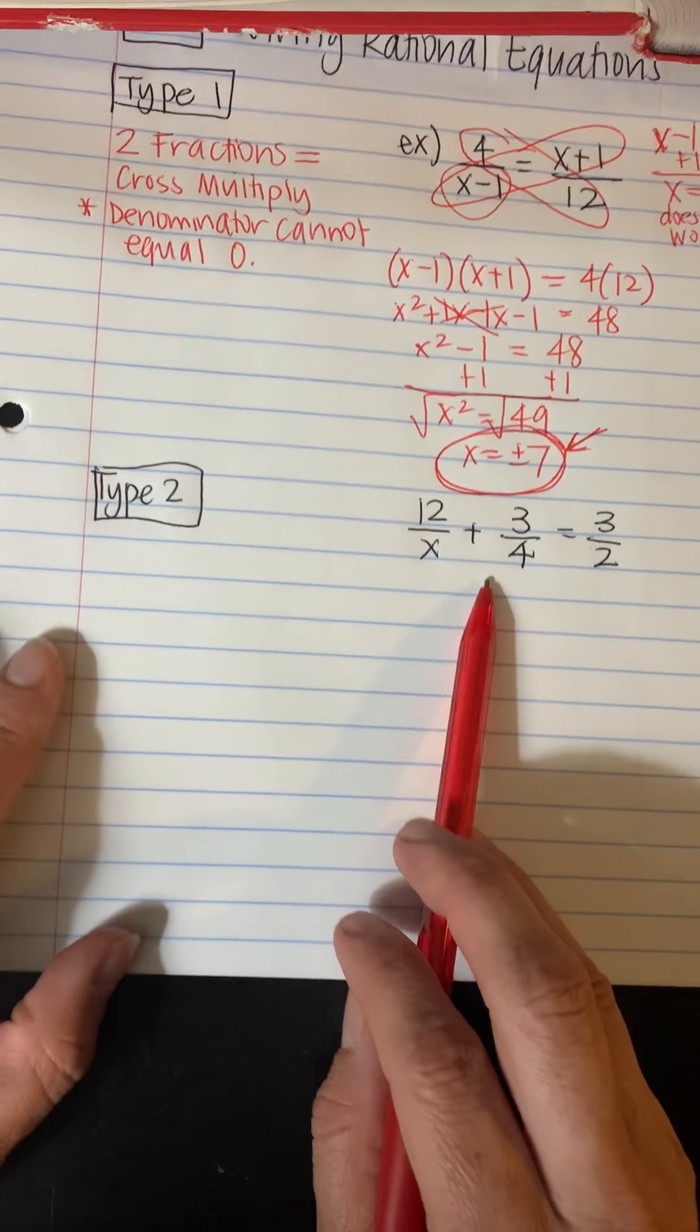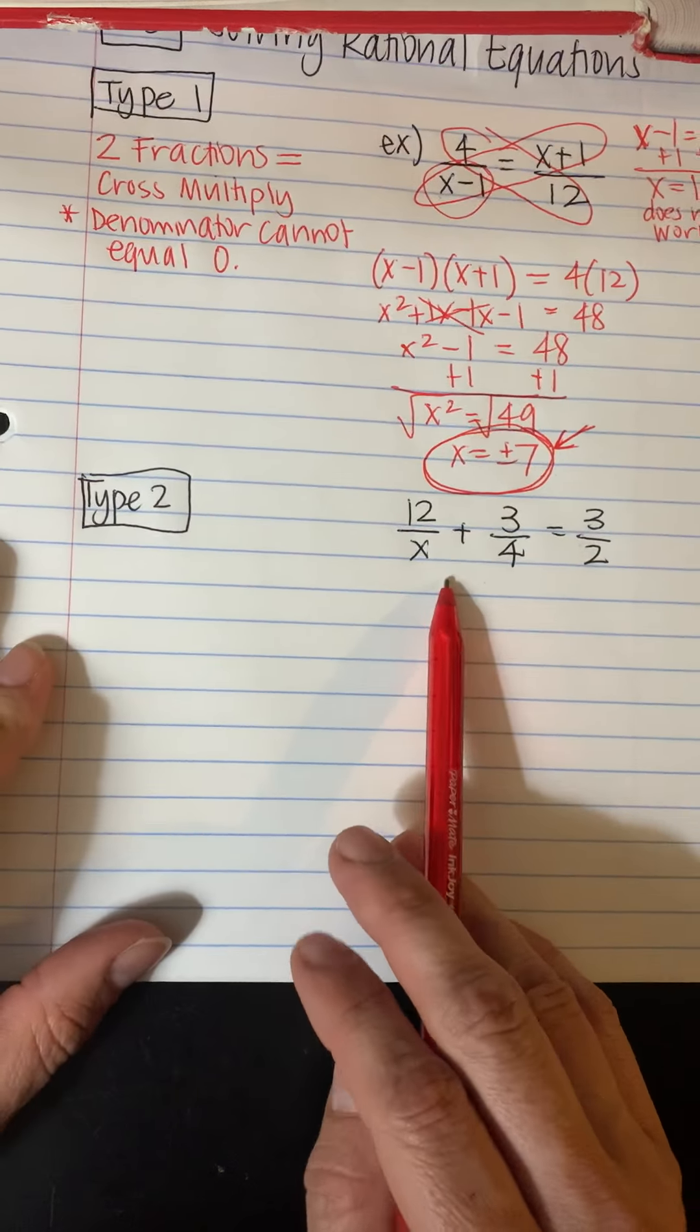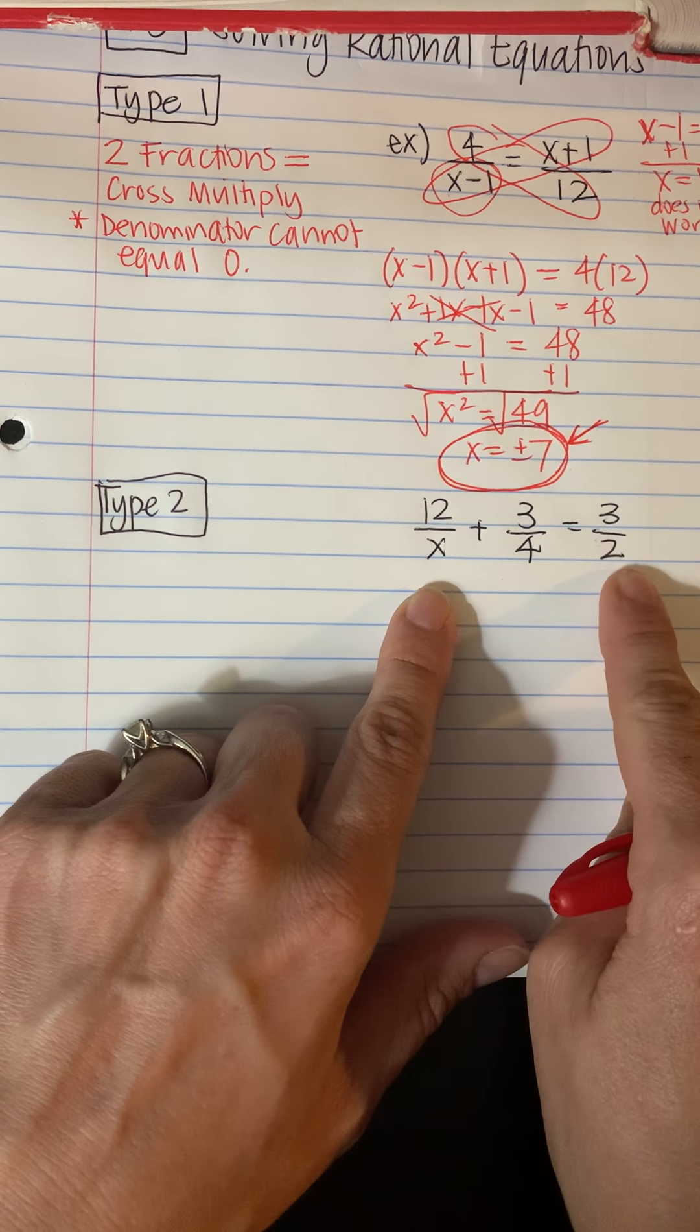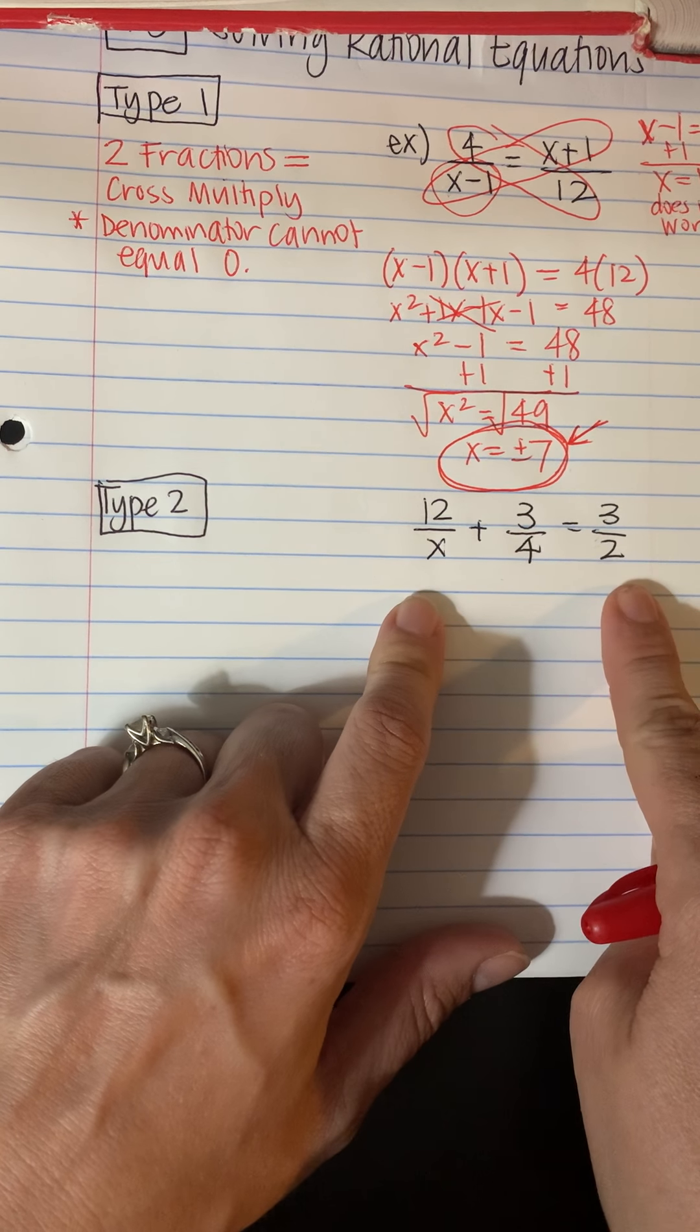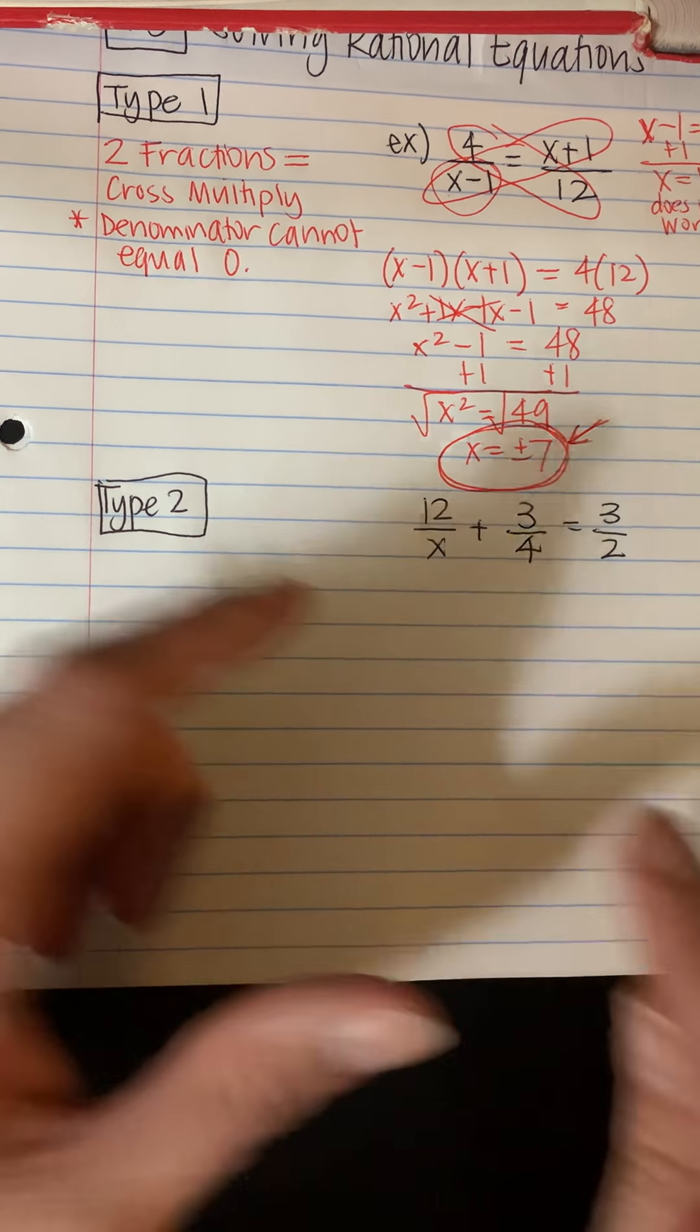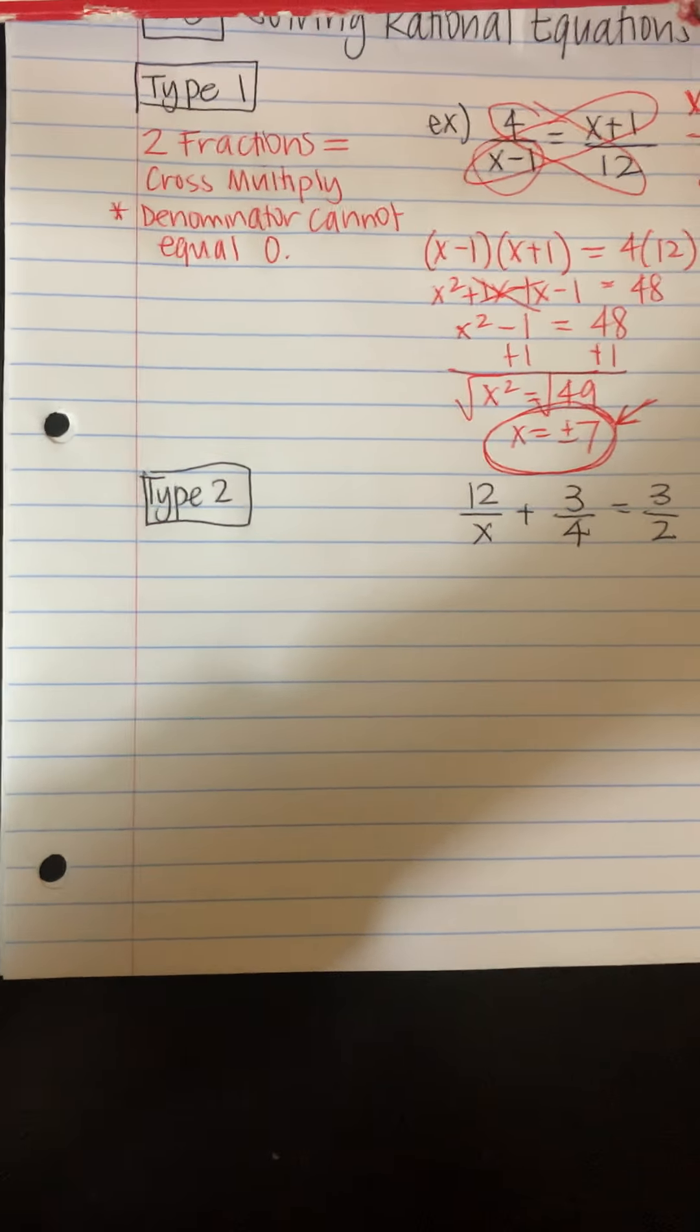Now, the next type of problem you'll see here is type 2. This is not a fraction equals a fraction. So this is two fractions are being added together and they equal something else. So I can't do cross multiply here because I have this addition. And I don't have common denominators, so there's kind of a lot going on here. And so we have a little bit more work to do in this case.